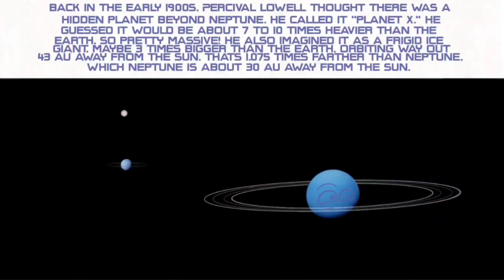Back in the early 1900s, Percival Lowell thought there was a hidden planet beyond Neptune. He called it Planet X. He guessed it would be about 7 to 10 times heavier than the Earth, so pretty massive. He also imagined it as a frigid ice giant, maybe three times bigger than the Earth, orbiting way out, 43 astronomical units away from the Sun. That's 1.075 times farther than Neptune, which is about 30 astronomical units away from the Sun.